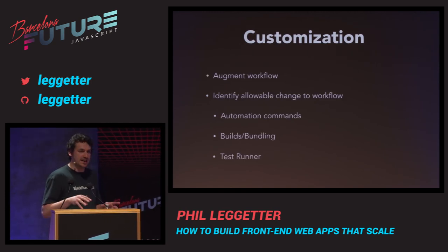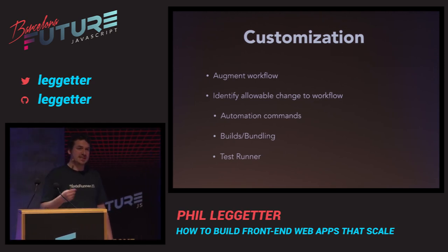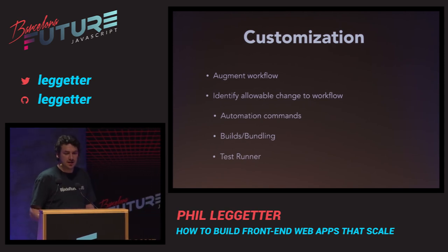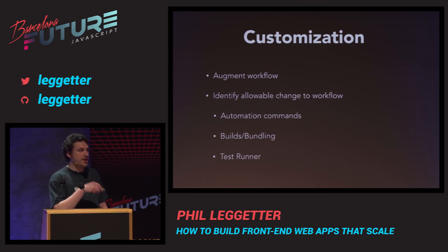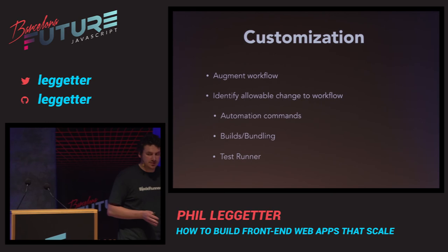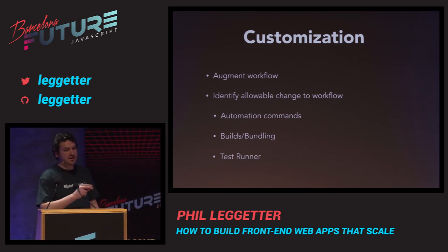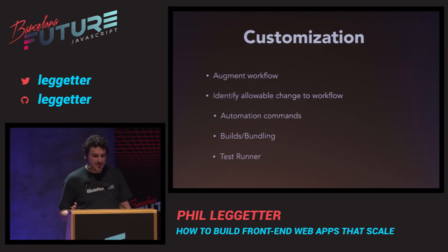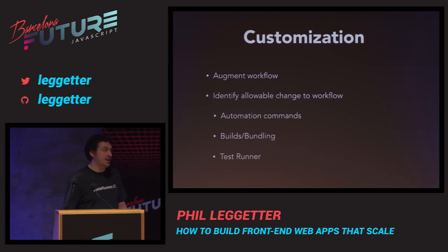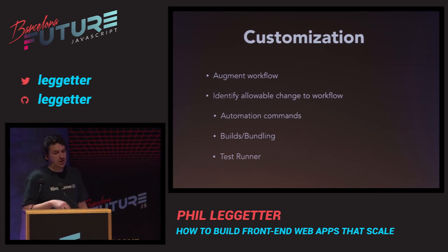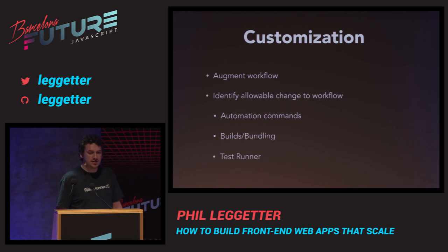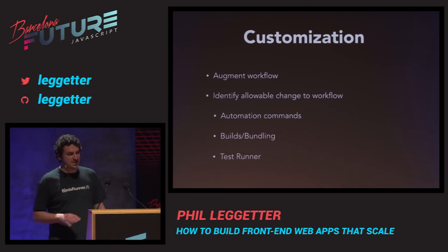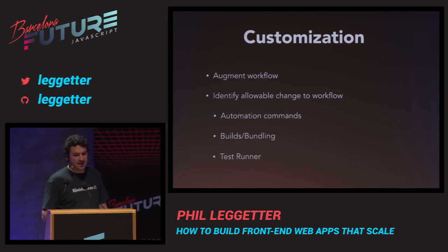You want to lock down the workflow to a certain extent but also identify points to extend and change it. You need to be able to add commands easily. You want to be able to change builds and bundling — we moved from namespace-style JavaScript to CommonJS/Node-style require syntax, and our bundling understands that. The language might change: CoffeeScript, ES6, TypeScript — you can plug those in. The test runner is also a customizable plug-in; we use JS Test Driver currently, which is a bit flaky, and we've identified that as something we want to change.